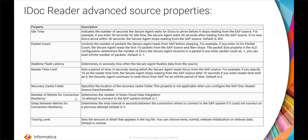Since this is a real-time connection that may run for a long time or even indefinitely, there might be some connection breakage in between. The number of retries determines how many times the mapping retries to re-establish the connection before marking a failure. The delay between retries for connection resiliency determines how many seconds to wait before attempting another connection test. The last property is the tracing level — we can set it to normal, verbose initialization, or verbose data, which is helpful when troubleshooting any data loss or data leak.